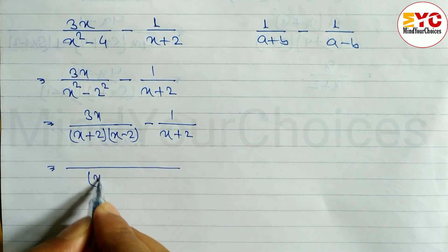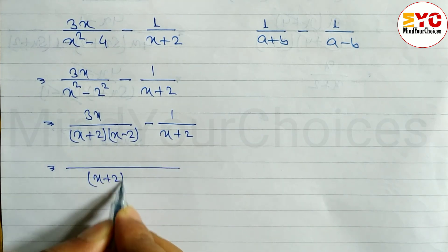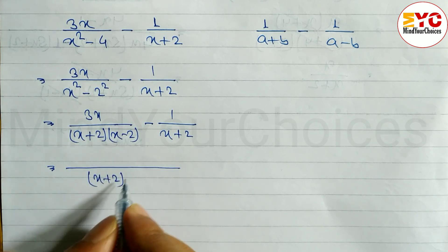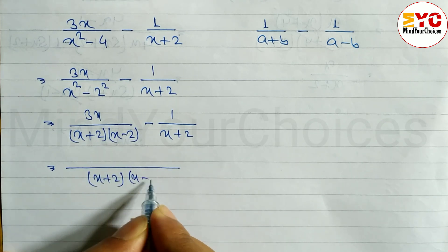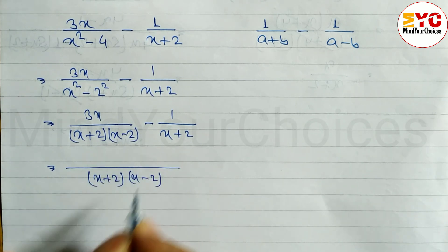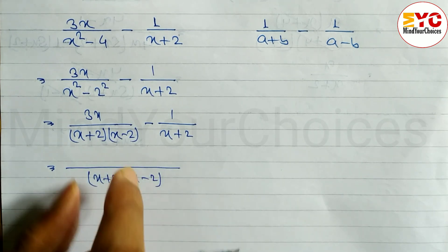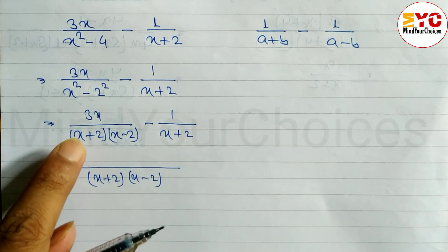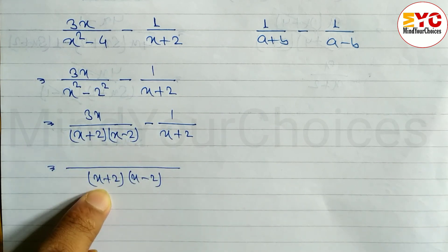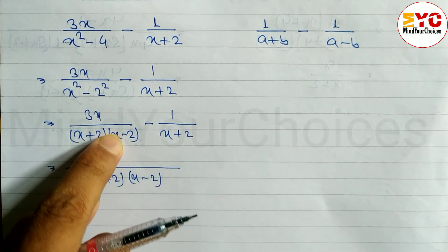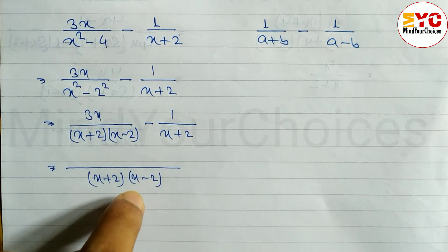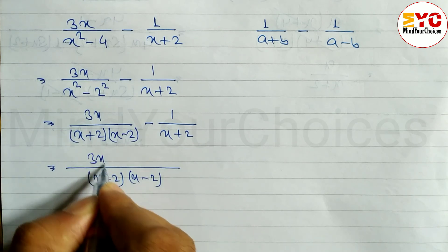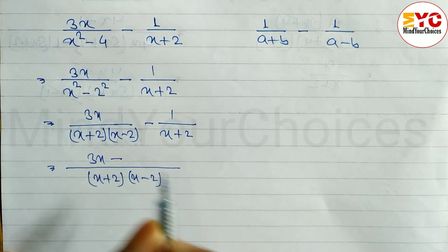Since (x plus 2) is common, we write it only once, and the remaining factor is (x minus 2). Now we divide the denominator: (x plus 2) and (x plus 2) cancel, (x minus 2) and (x minus 2) cancel, leaving 1. So 1 times 3x gives us 3x in the numerator.